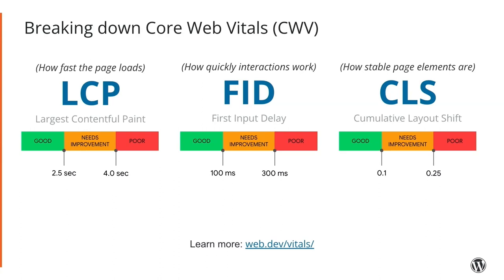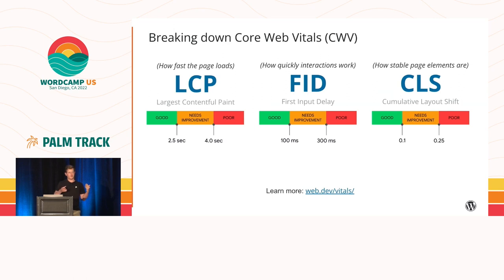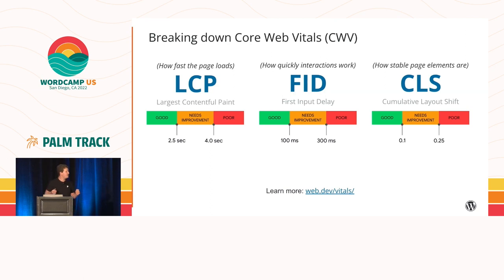The other two are FID and CLS. FID, first input delay, is essentially how fast the web page responds to user interactions — for example, when you scroll down and it lags, or when you click something and it only reacts after two seconds. CLS, cumulative layout shift, is about page elements not moving unexpectedly without user interaction. You've probably had the experience on your phone where you want to click a button, but just as you click it shifts down and you click on something else, often an ad. That's what makes for a bad CLS score.